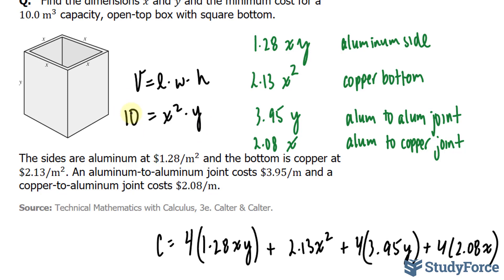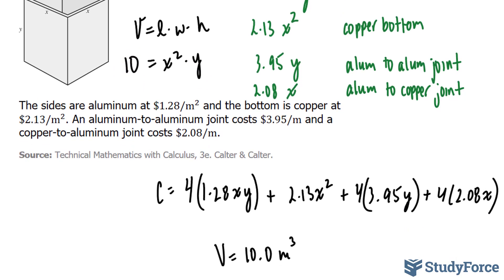We can actually convert this equation so that it's exclusively in terms of x by solving for y of this volume equation, where we get y equals 10 over x squared. And if I replace this number into all of these y's, I now have an equation that's exclusively in terms of x, and I can take the derivative of that with respect to x.